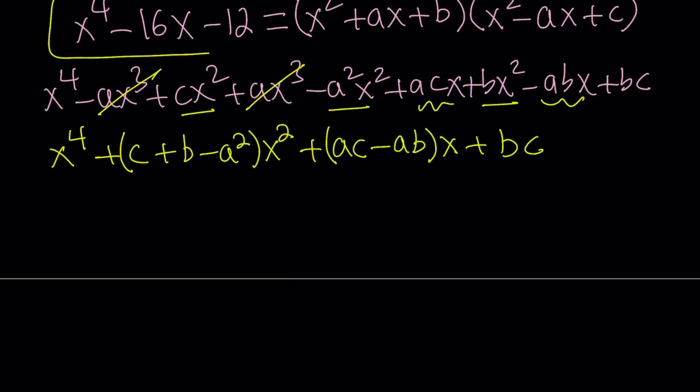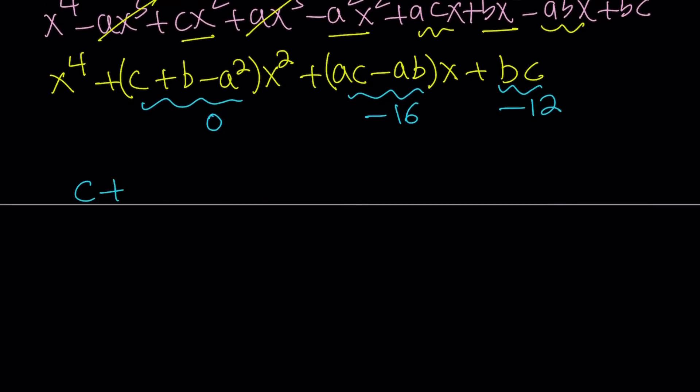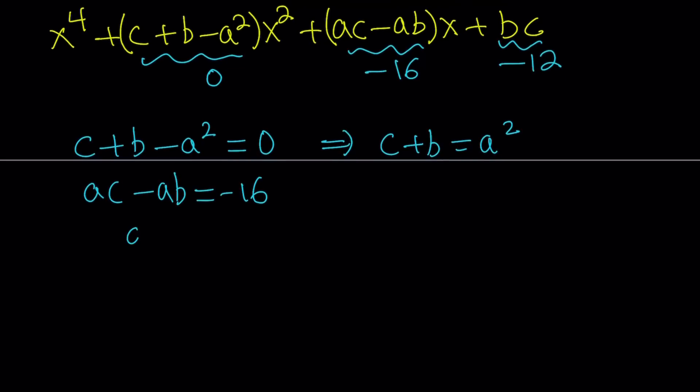Let's combine like terms. We have x to the fourth power, and then we can write that as c plus b minus a squared multiplied by x squared, and then for x terms we can write it as ac minus ab times x, and then finally we have bc. Now, comparing this to our original quartic, we notice that the coefficient of x squared must be zero, and the coefficient of x must be negative 16, and the constant term needs to be negative 12. So that gives us three equations, and we have three variables, so we should be able to solve this.